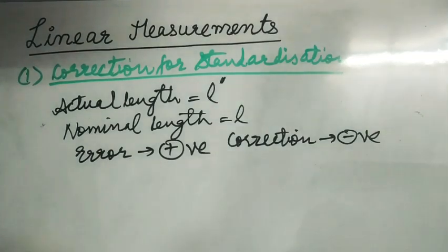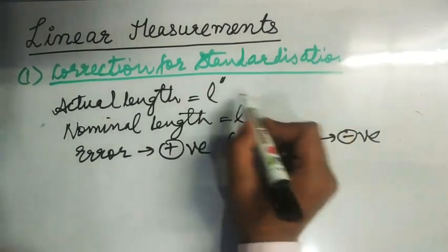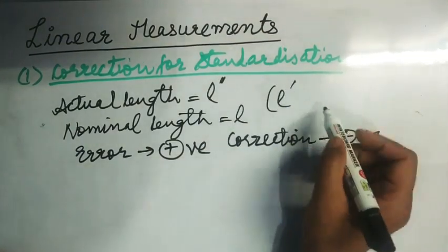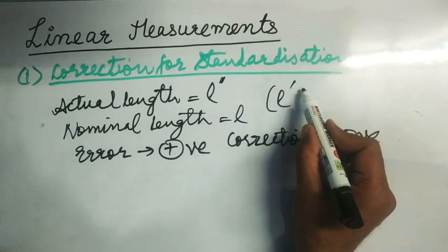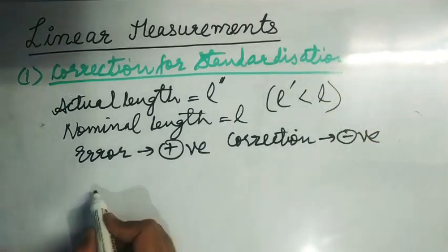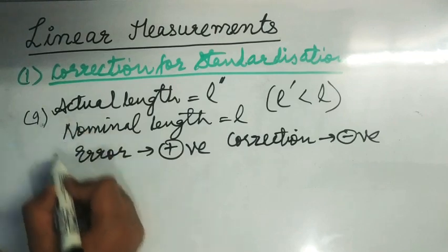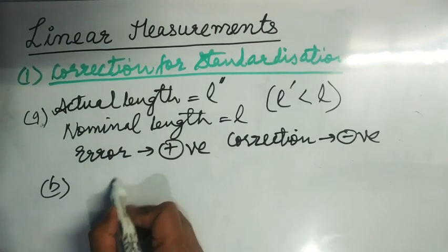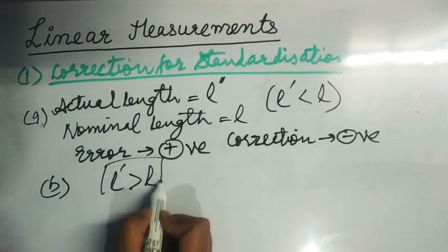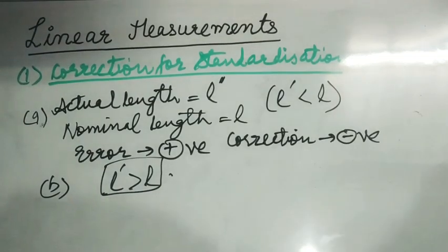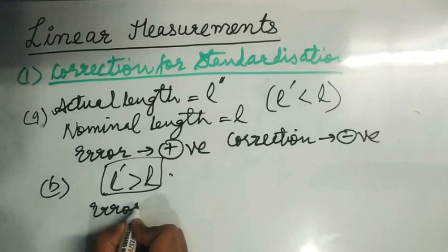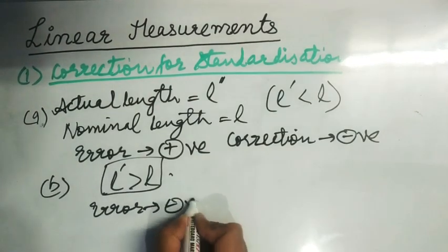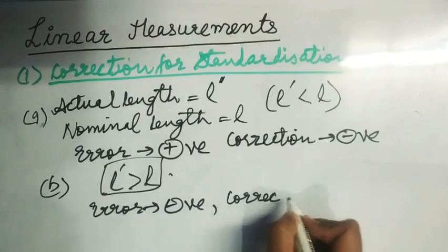On the other hand, in Case B, if the actual length L' is greater than the nominal length, then the distance measured will be shorter than the correct distance. So in this case the error will be negative, and the correction will be positive.